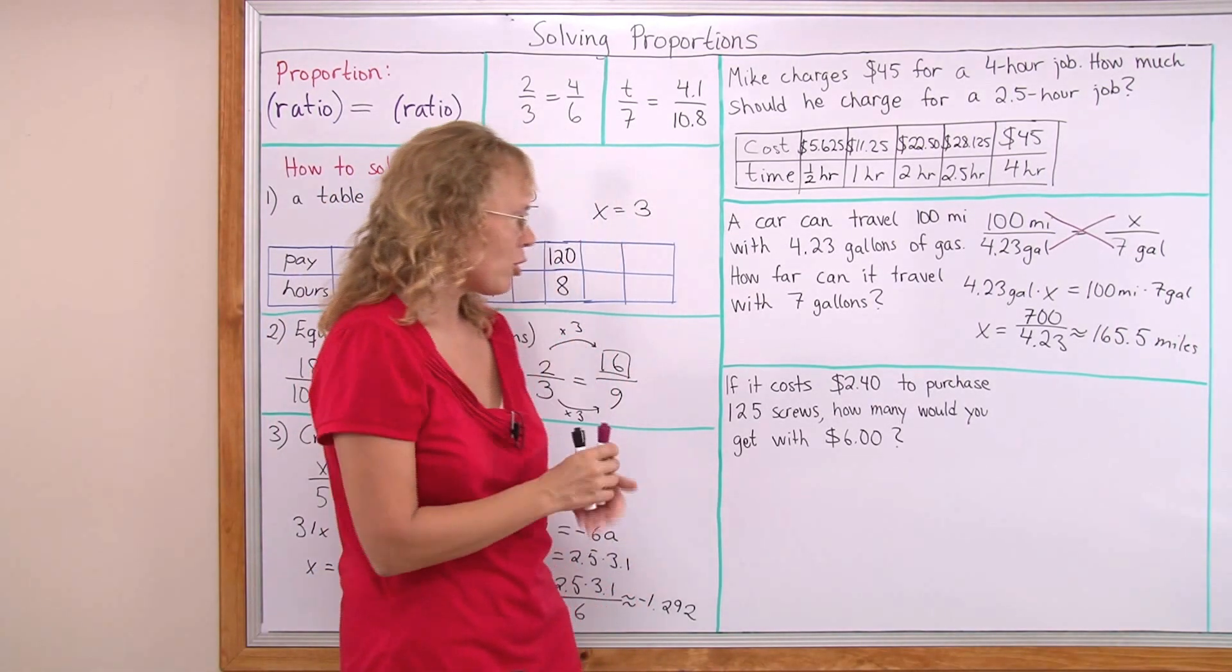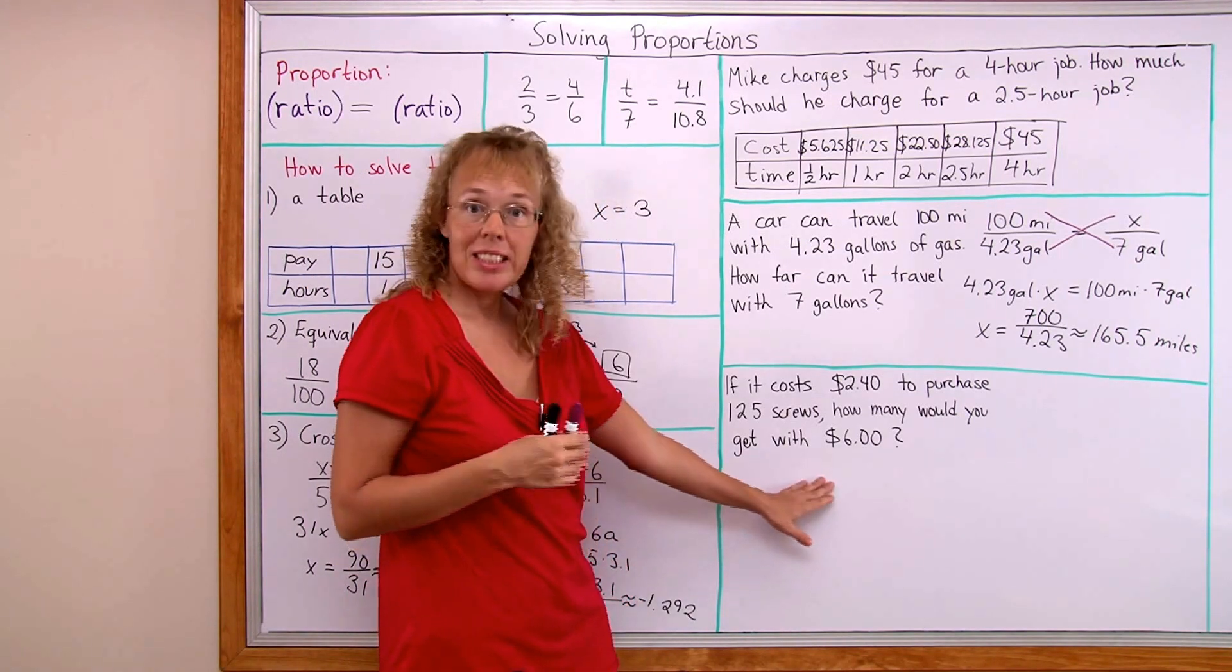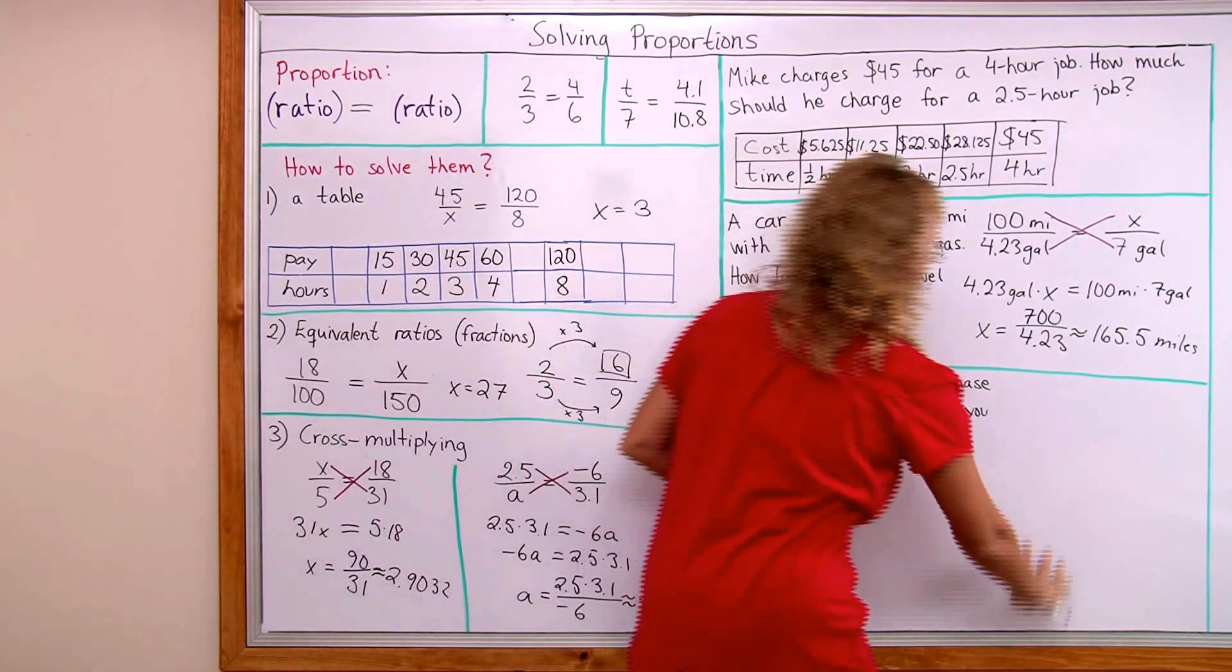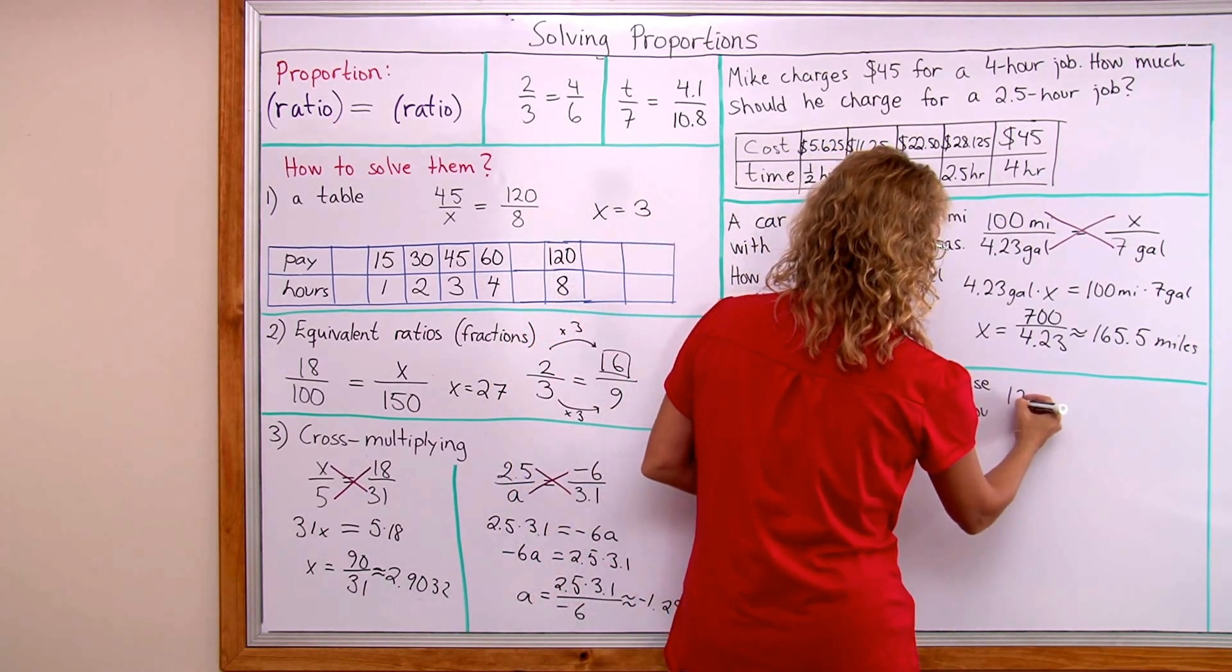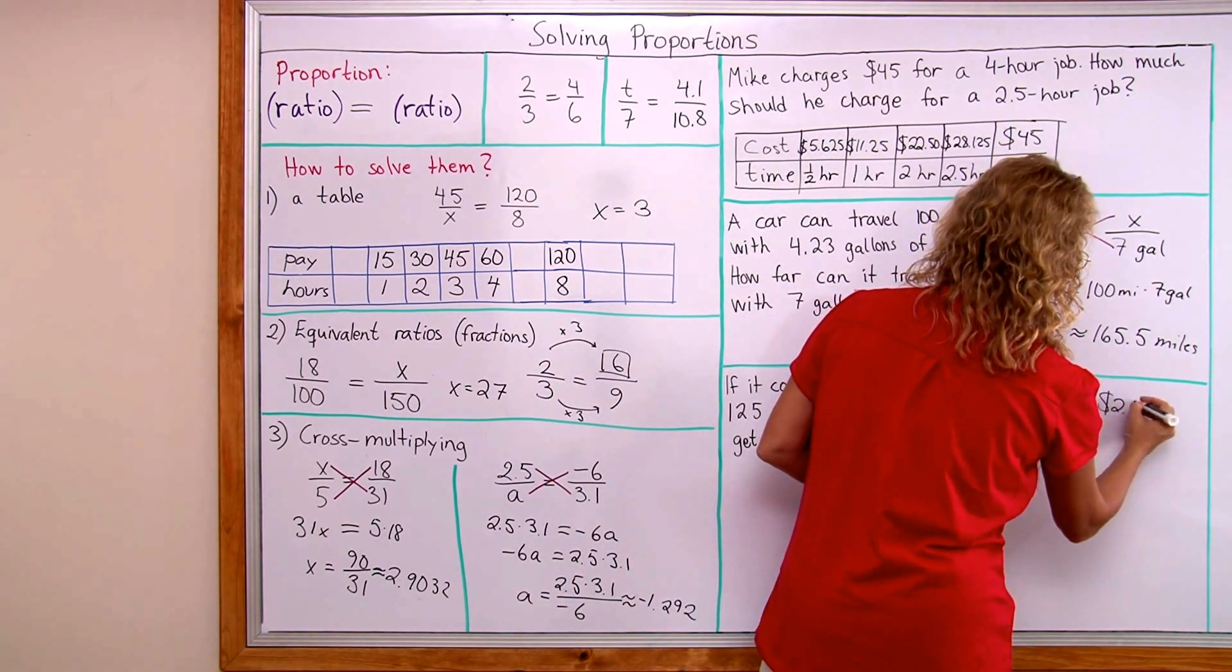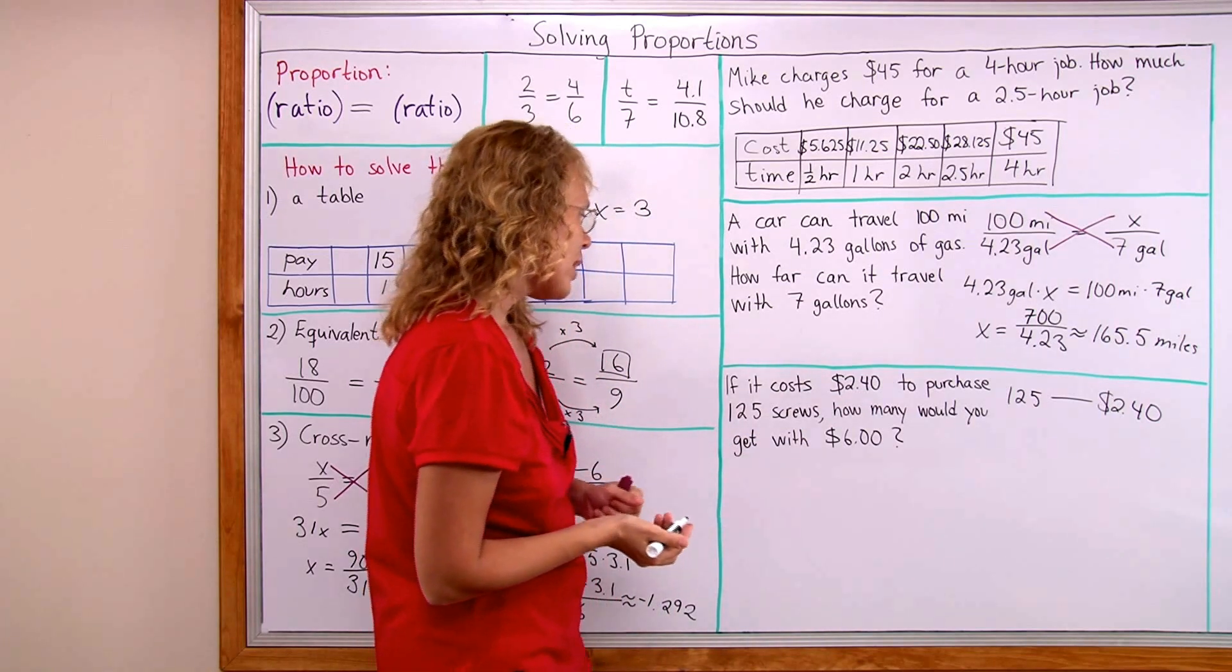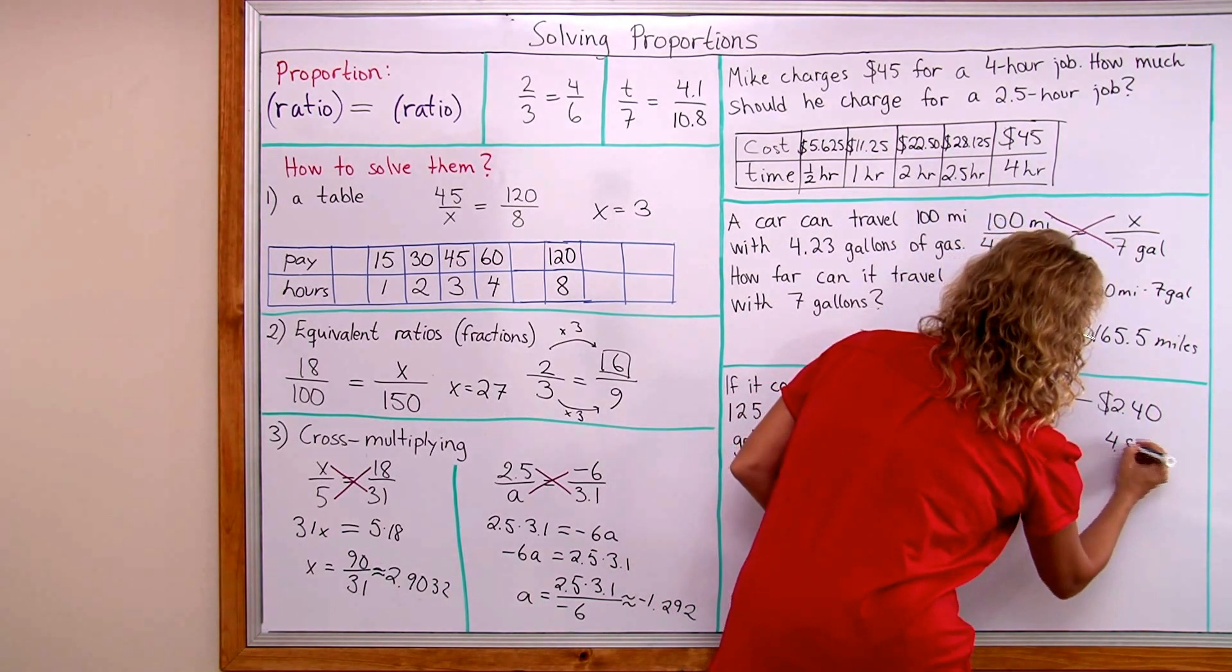Lastly, if it costs two dollars forty to purchase 125 screws, how many would you get with six dollars? This I'm gonna solve in two different ways. One way is kind of like the table but I'm gonna go this way instead of horizontally. Let's say that we have 125 screws and that is two dollars forty. Okay? That corresponds with two dollars forty. That's what this line is meaning. It corresponds with that. Okay? And then how many would you get with six dollars? Well, let me see that I first double this.